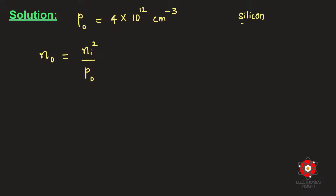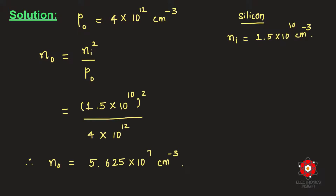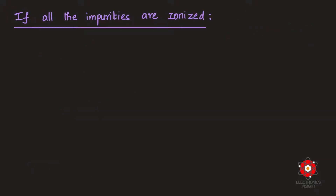For silicon, the intrinsic carrier concentration ni is 1.5×10¹⁰ per cm³. After substituting ni and p₀ into the mass action law formula, we get the electron density n₀ = 5.625×10⁷ per cm³.